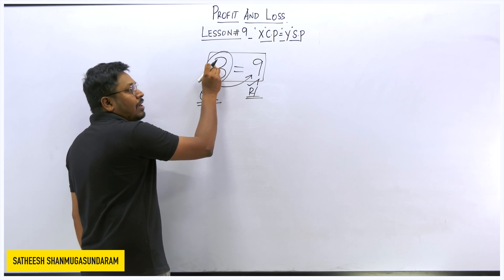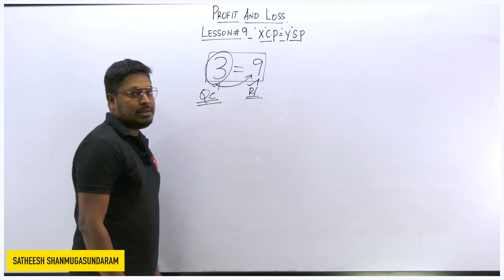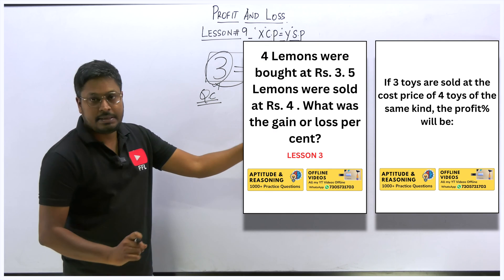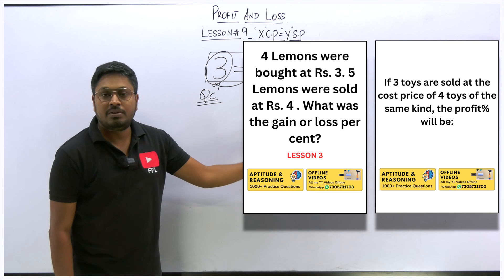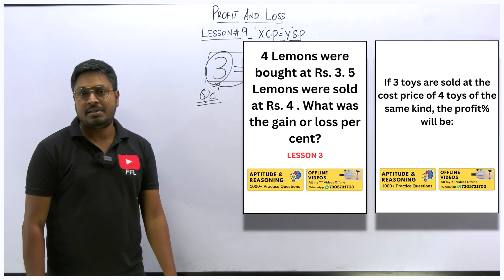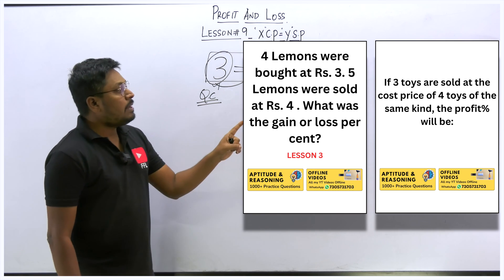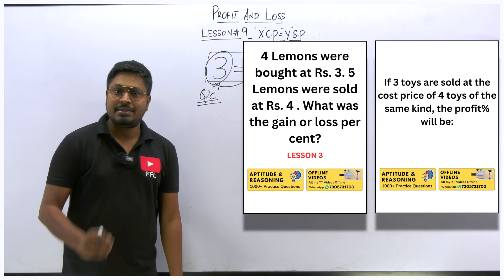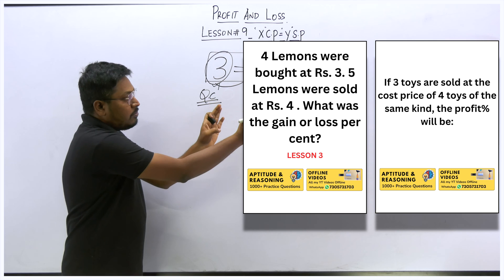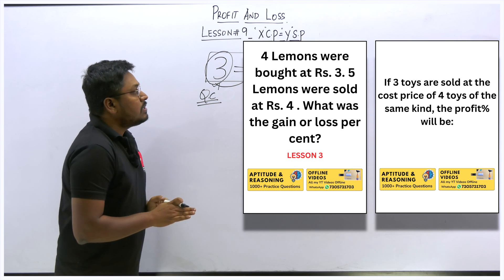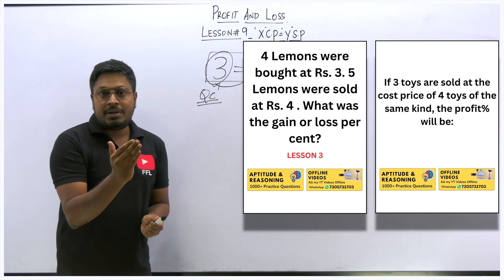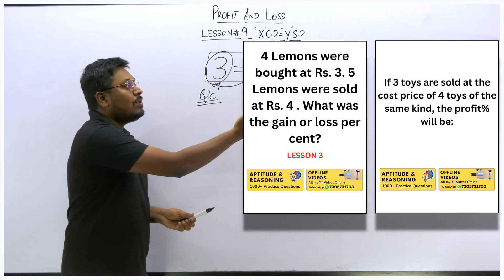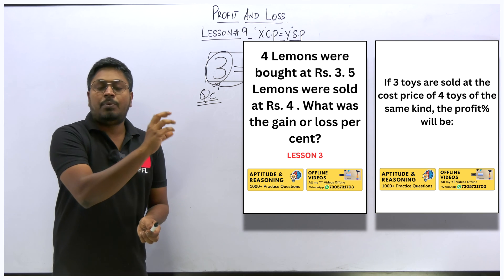You have to understand one thing: you should know the difference between a lesson three question and a lesson nine question, because the question format will be different even though the solving method is the same. I will show you both questions side by side. Lesson three question: four lemons were bought at three, five lemons were sold at four — find the profit or loss percentage. Now lesson nine question: three toys were sold at a four-toy cost price. Both talk about quantities.